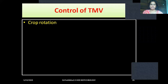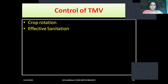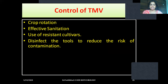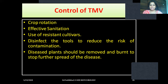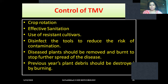Control of tobacco mosaic virus: Crop rotation is one of the effective methods for the control of tobacco mosaic virus. Effective sanitation is also recommended. Use of resistant cultivars. Disinfect the tools to reduce the risk of contamination. Diseased plants should be removed and burnt to stop further spread of the disease. Previous year's plant debris should be destroyed by burning.